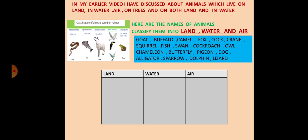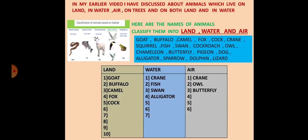I have given you a box of animals: goat, buffalo, camel, fox, cock, crane, squirrel, fish, swan, cockroach, owl, chameleon, butterfly, pigeon, dog, alligator, sparrow, dolphin and lizard.